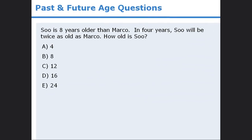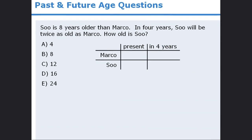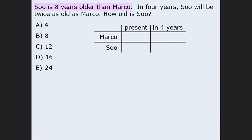In this lesson, we'll examine questions in which we are given information about people's ages in the past and/or in the future. We are given information about the present ages of Sue and Marco, and their ages four years in the future. To solve this question, we'll create a table with the two given time periods as columns: a column for present ages and a column for ages four years in the future. We are told that Sue is 8 years older than Marco, so let's assign a variable to the smaller value, Marco's age. Let M represent Marco's present age.